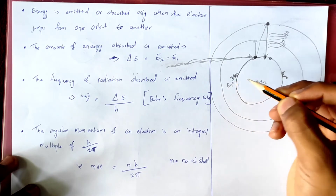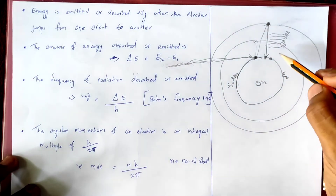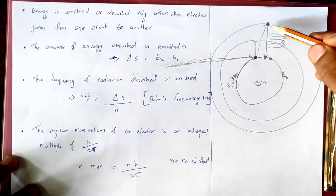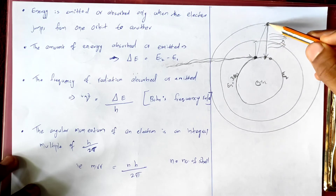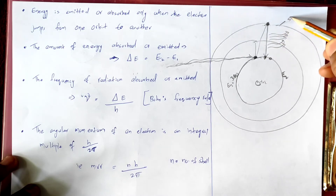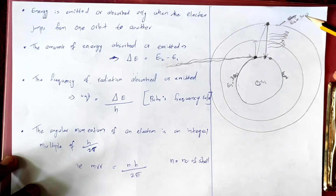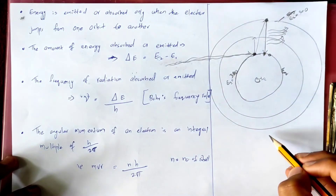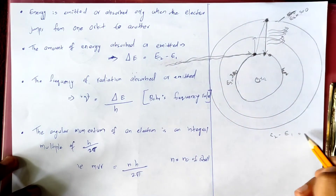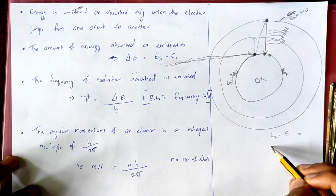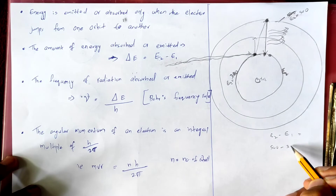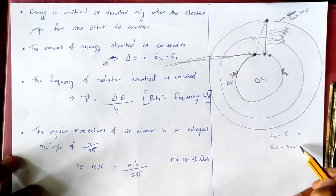For example, if E1 is equal to 300 J and E2 is equal to 500 J, then delta E equals E2 minus E1, which is 500 minus 300, equal to 200 J.